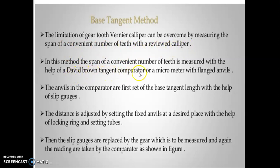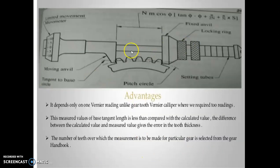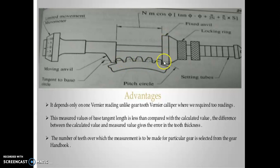The David Brown tangent comparator is used in the base tangent method. The anvils in the comparator are first set to the base tangent length with the help of slip gauges. The distance is adjusted by setting fixed anvils at a desired place with a locking ring and setting tubes. Then slip gauges are replaced by the gear under test, readings are taken, and individual tooth thickness for a span of five teeth can be calculated.